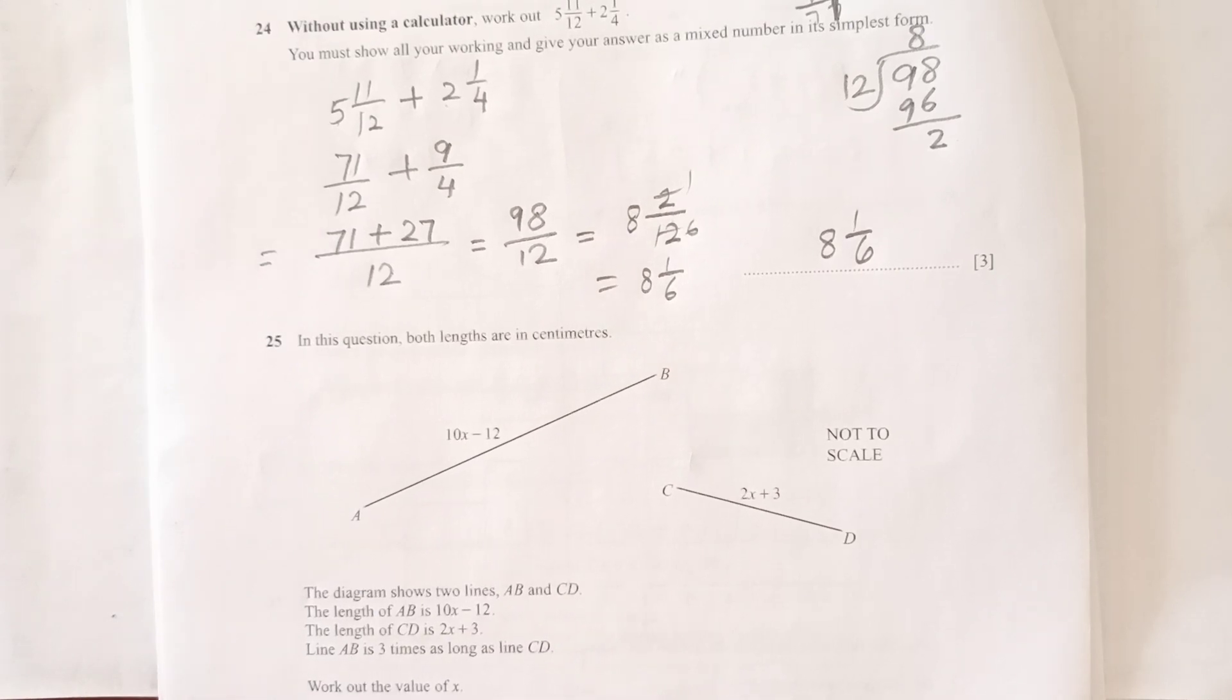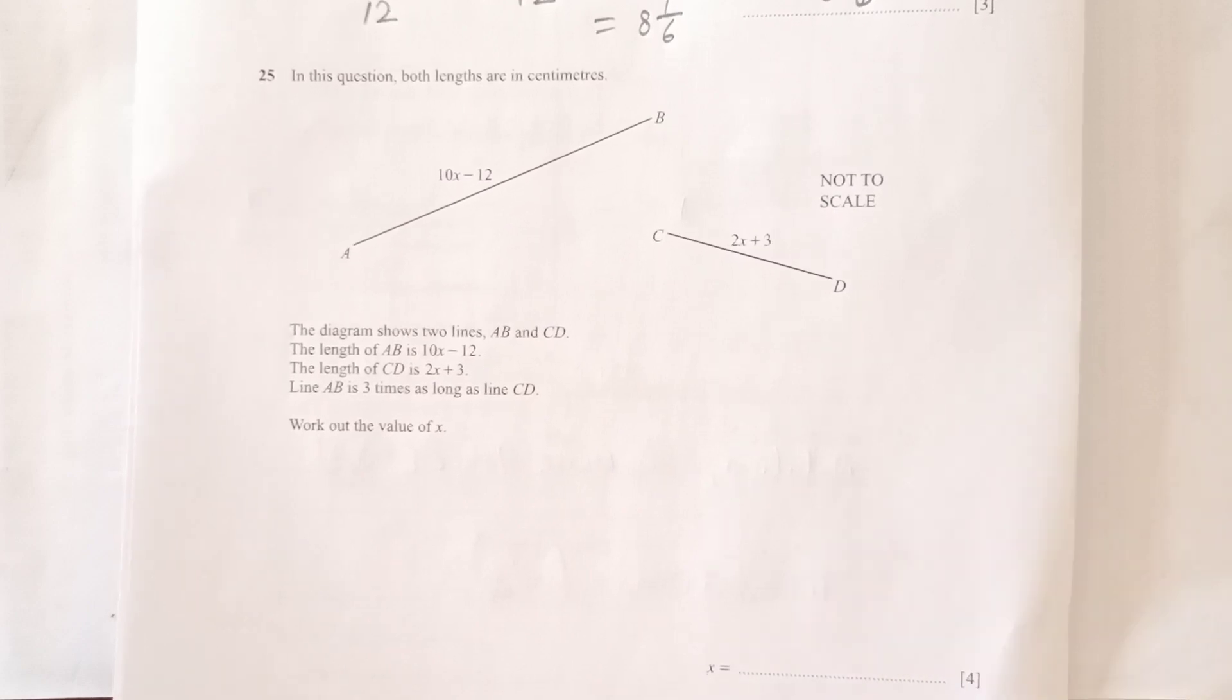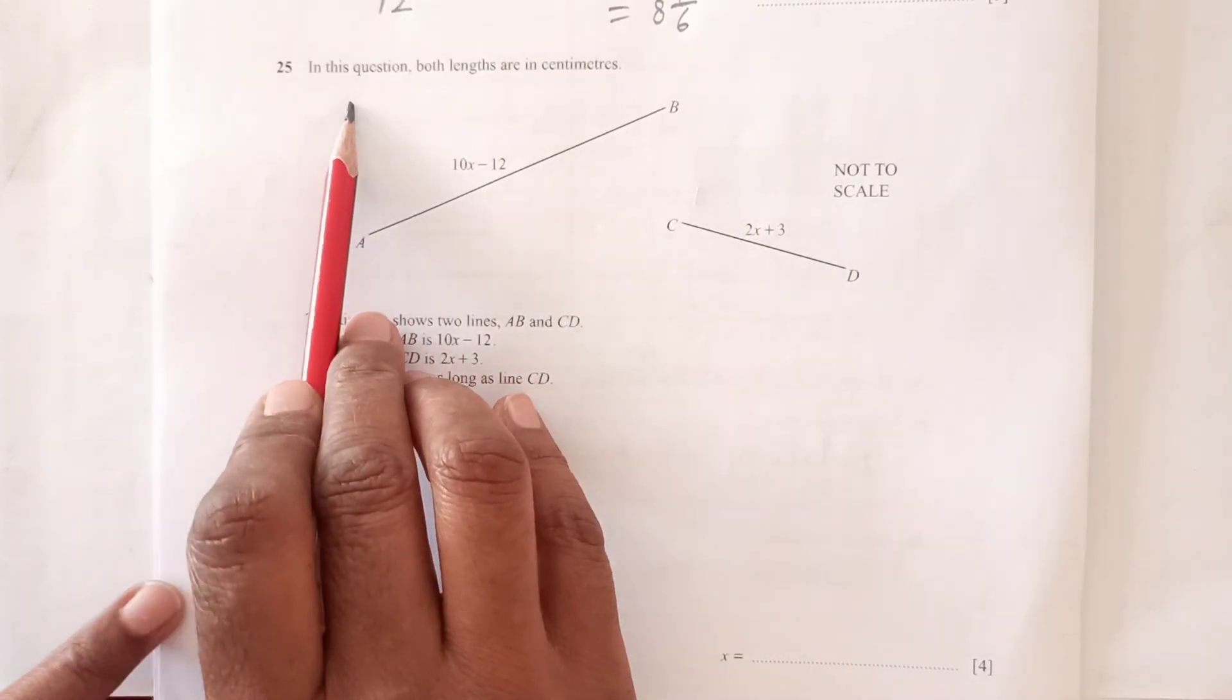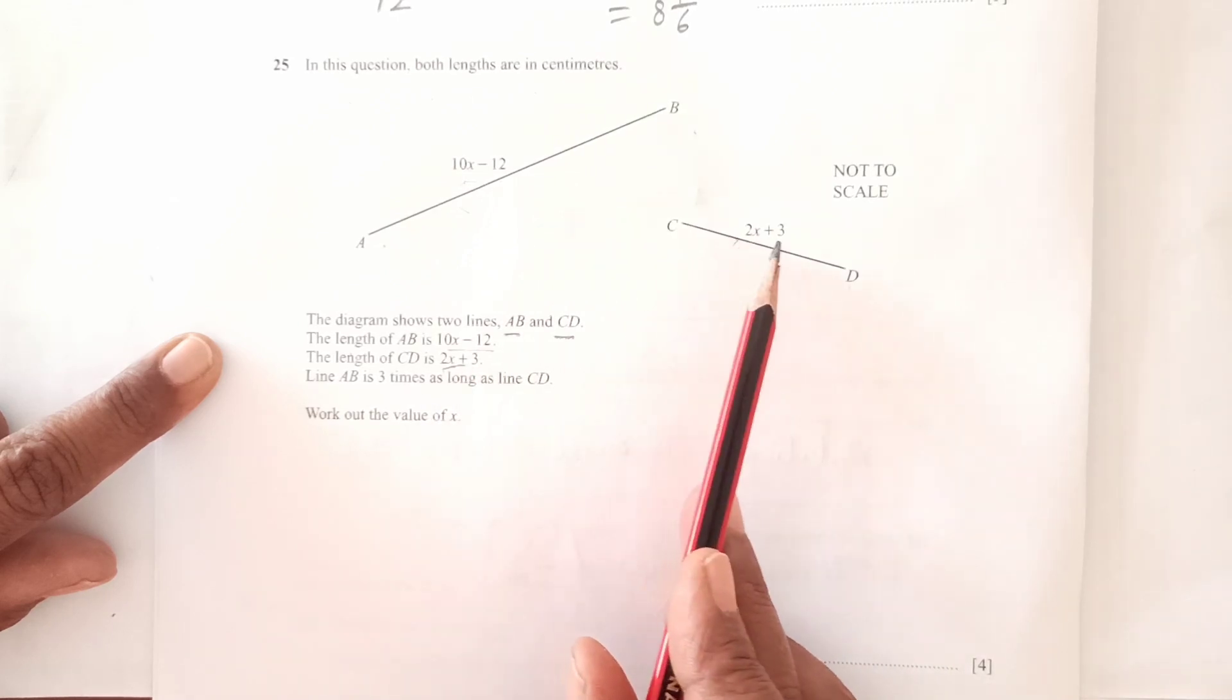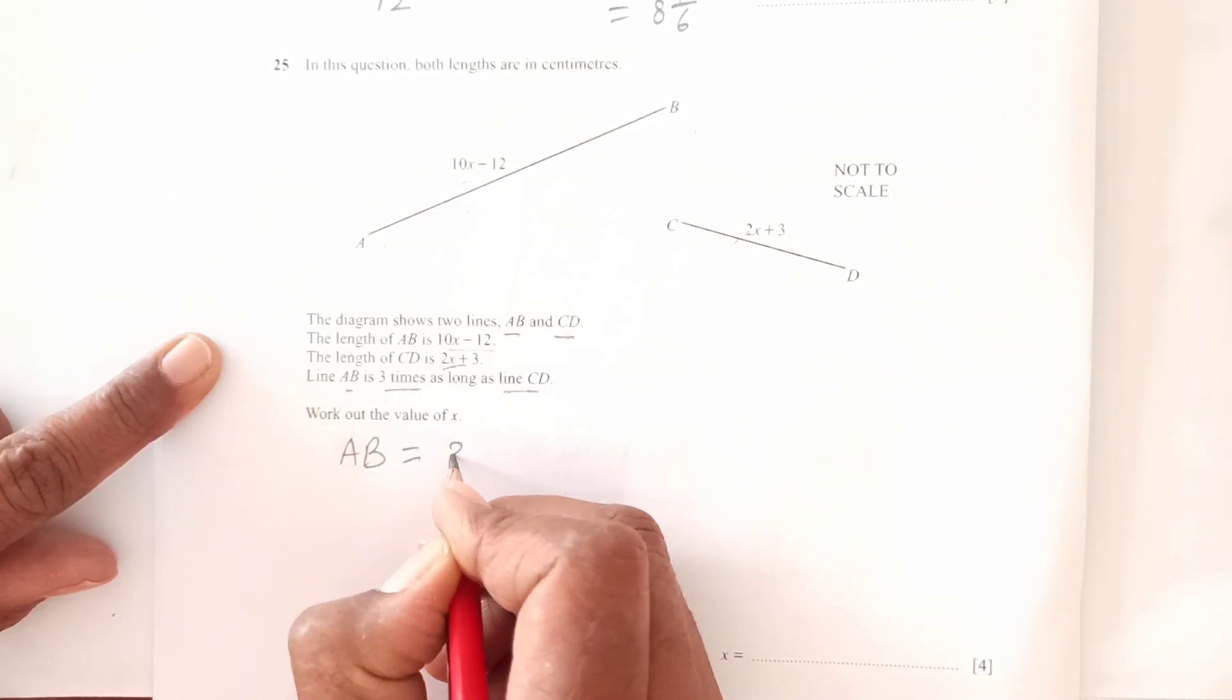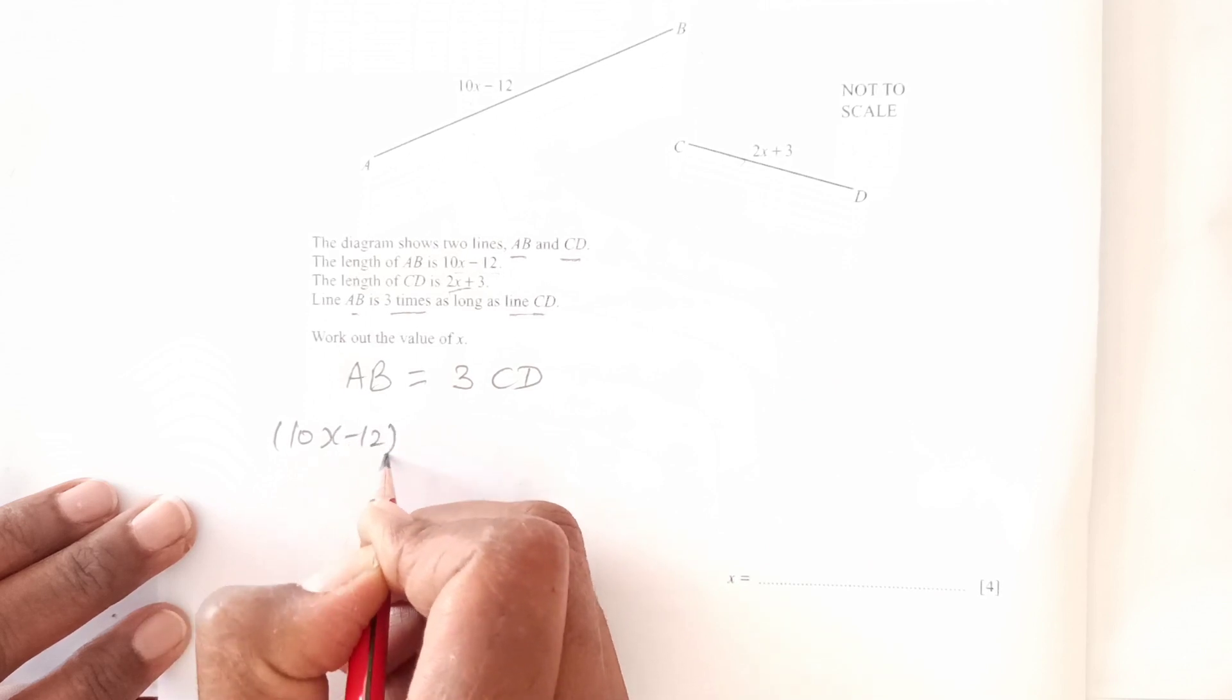Number 25: The diagram shows two lines AB and CD. Both lengths are in centimeters. The length of AB is 10x minus 12, and the length of CD is 2x plus 1. Line AB is three times as long as line CD. So AB equals 3 times CD.